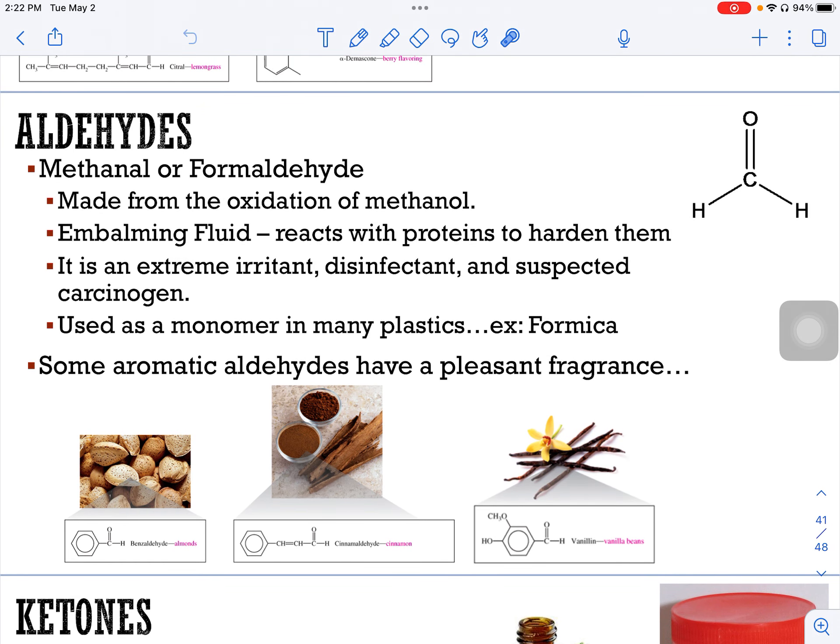If you're sitting in my classroom, the first sign to the right of my TV is blue and red, and that is the aldehydes. The aldehydes have an R group, a C, and then an H. So the simplest of the aldehydes is this one right here called methanal, or commonly known as formaldehyde. Made from the oxidation of methanol, it is embalming fluid, reacts with proteins to harden them. It's an extreme irritant, disinfectant, and a suspected carcinogen. So now they actually use a different type of embalming fluid for bodies. It's used as a monomer to make many plastics. In this case, Formica is made from formaldehyde.